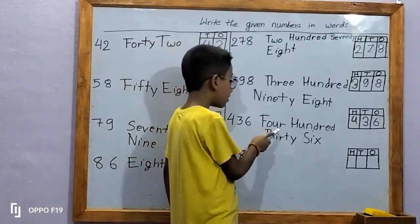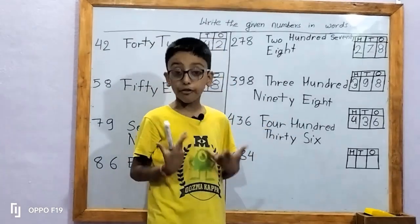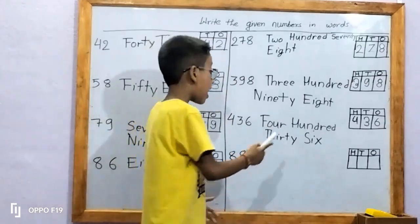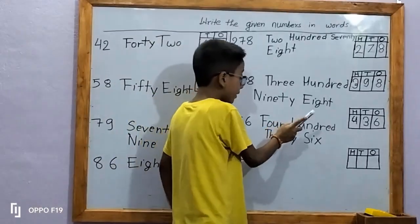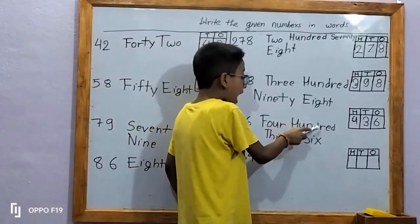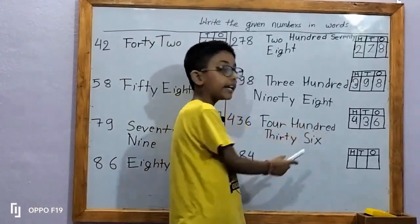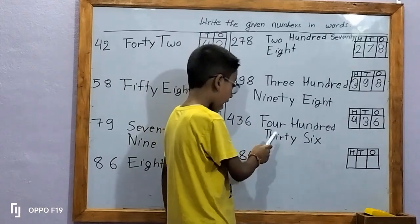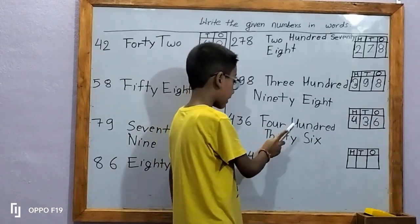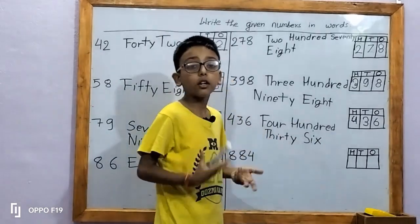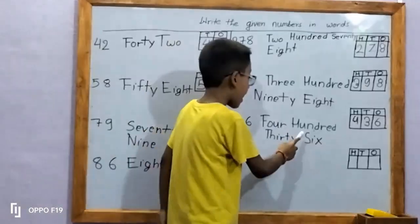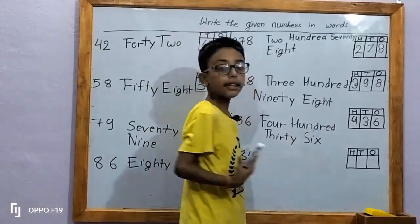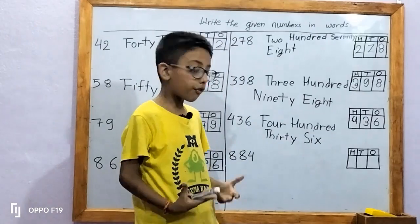Let's write in words: F-O-U-R, 4, H-U-N-D-R-E-D, 100. T-H-I-R-T-Y, 30. S-I-X, six. 436.